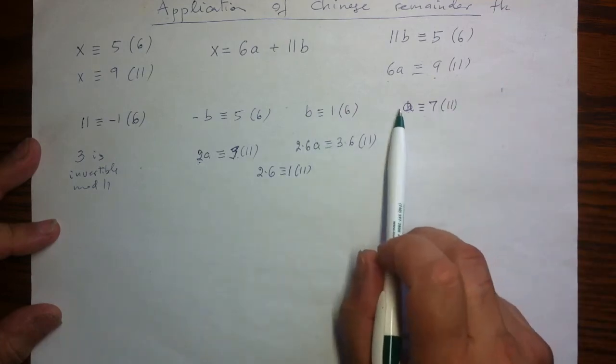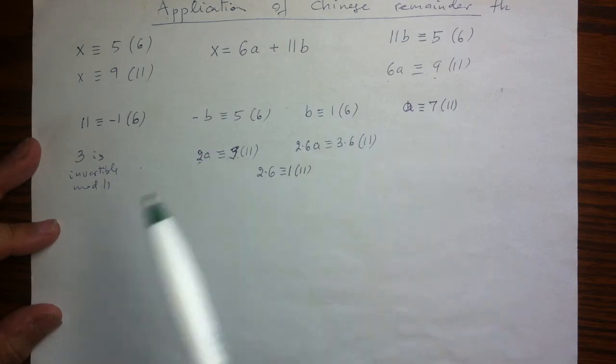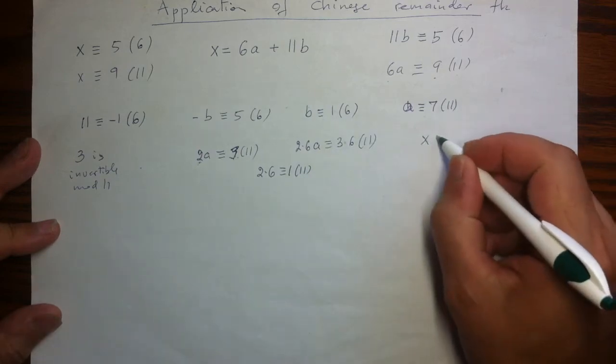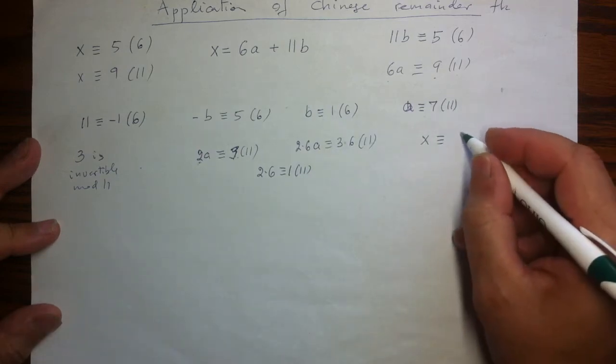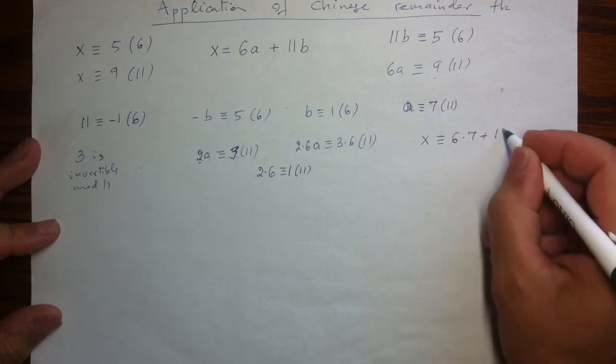So I know my answers. I know my a and b. I know them as 1 and 7 or that way around. So x is then what it is: 6 times 7 plus 1 copy of 11.